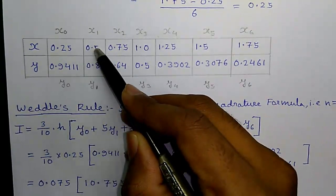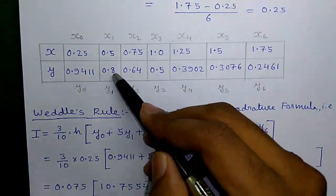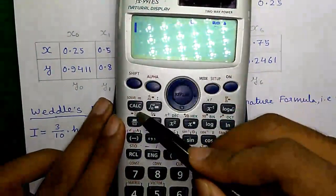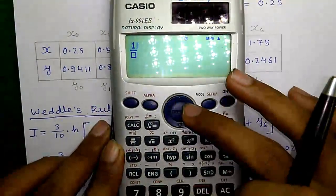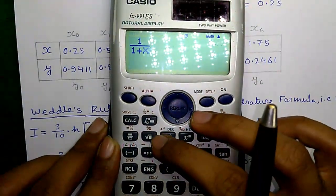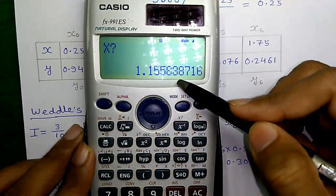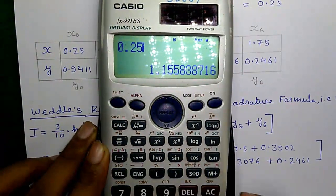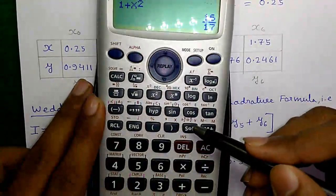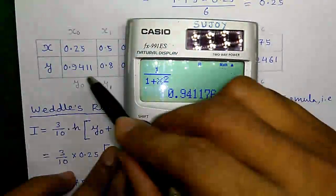Similarly, if we put x equals to 0.5 here you will get y equals to 0.8. Now, we can do it directly on the calculator. For that, press this fraction button then 1 divided by 1 plus press alpha and this button for x and this button for square. Now, press this calc button. It will ask you for the value of x. Enter 0.25 and press the equals to button. So, it will give you 16 by 17, press s to d button to get the decimal which is 0.9411.